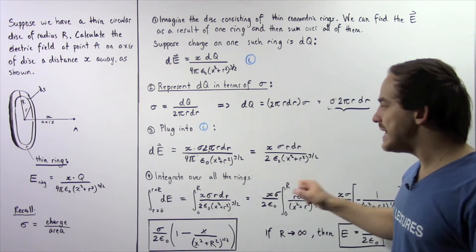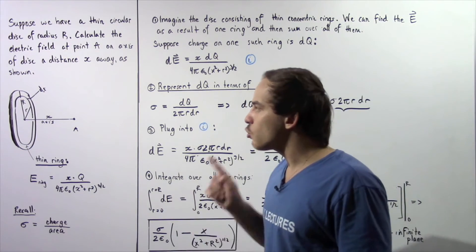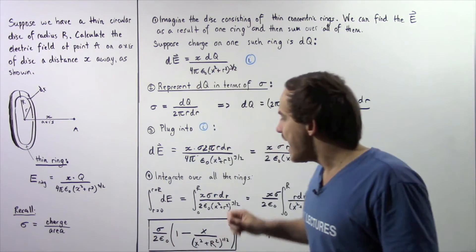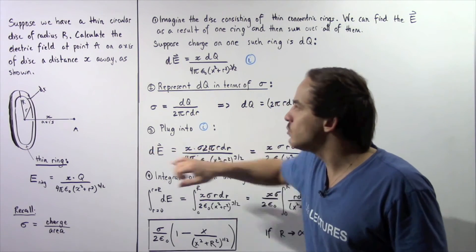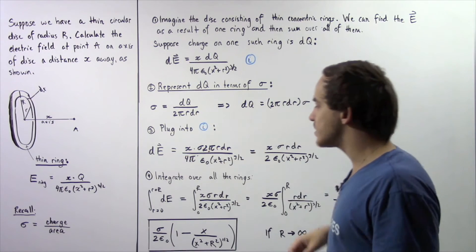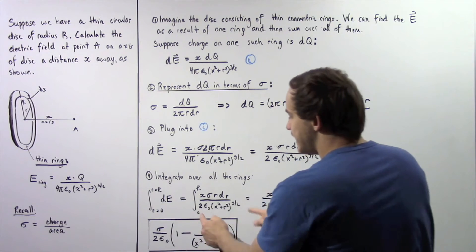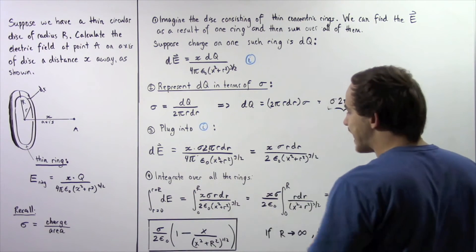So our electric field is equal to the integral of dE beginning with a radius equal to 0 and ending with our radius equaling to the radius of our disk given by uppercase R. So we take this entire fraction and we plug it in for dE. And that's exactly what we get.